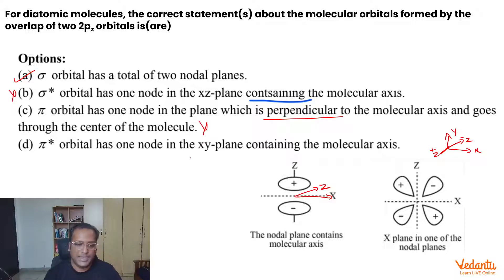Pi star has only 1 node in the x-y plane containing the molecular axis. This was x, this is z, this becomes your y plane. You can see that in the x-y plane, yes, there is indeed a nodal plane. There is no electron density in the x-y plane or also in the y-z plane. So it is correct.